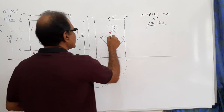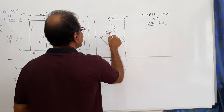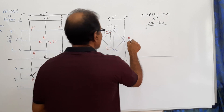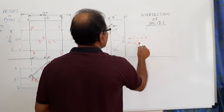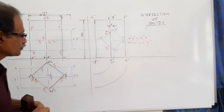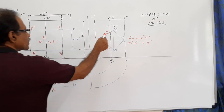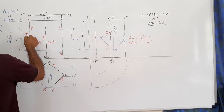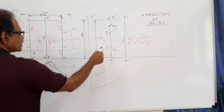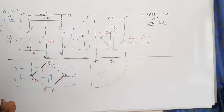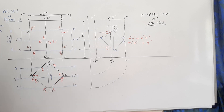Edge A-E cuts the surface of the horizontal prism. I call these intersection points M and N - so on edge A-E we get point M, and on edge A-E (the far side) point N. On edge C-G we get M1 and N1 on the other side. Draw horizontal projection lines from M, N, M1, N1 to find M-dash, N-dash, M1-dash, N1-dash in the elevation.